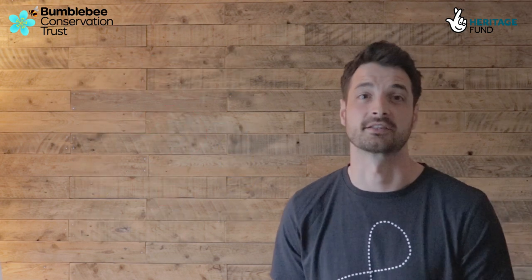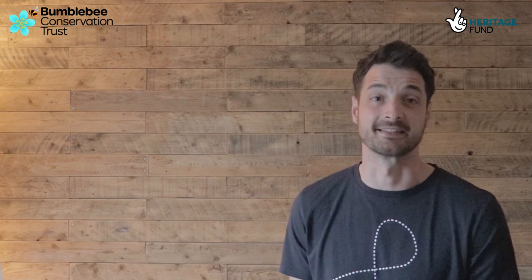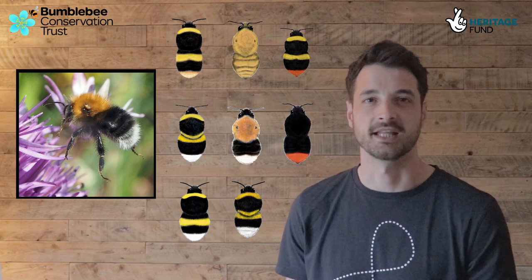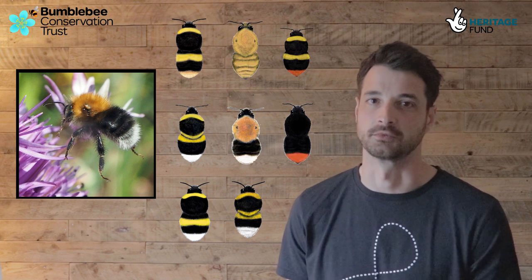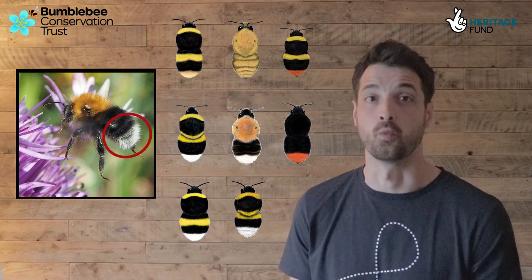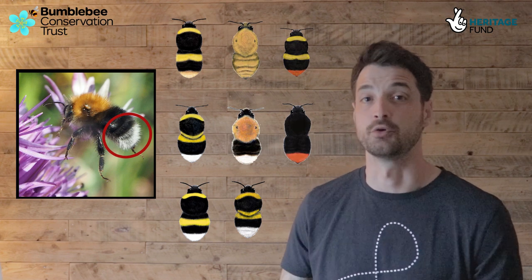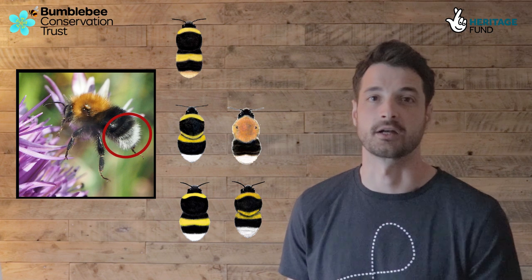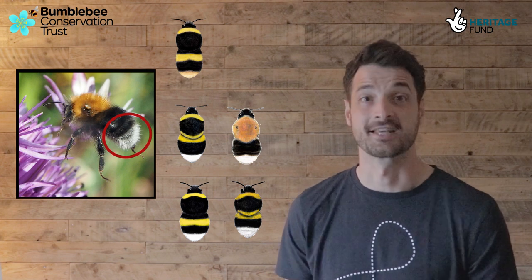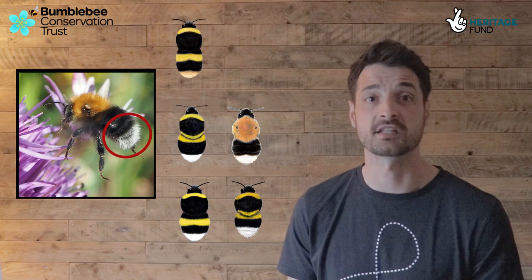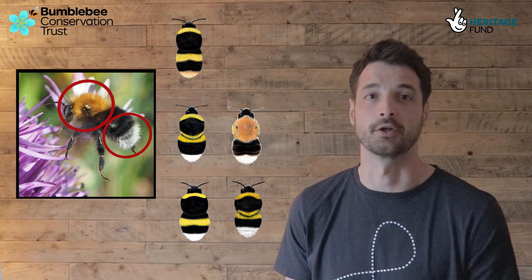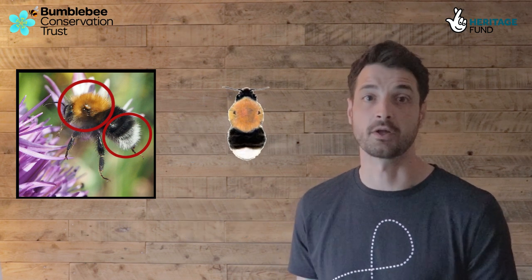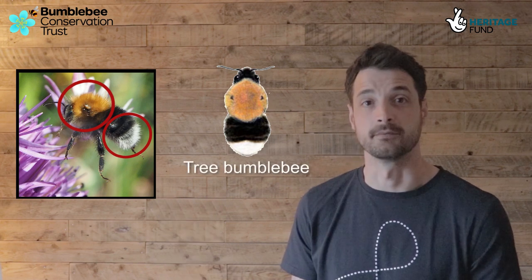Now we have everything we need, so let's have a go at identifying one together. Step one: decide on the tail colour — we can choose from white or off-white, red, or uniform colour. This bumblebee clearly has a white tail, and by removing all bumblebees without white tails we're already narrowing things down. Step two: look for banding. It's clear there are no yellow bands on this bumblebee — instead it has a solid block of ginger colour on its thorax. So we've now identified this bumblebee as the tree bumblebee.